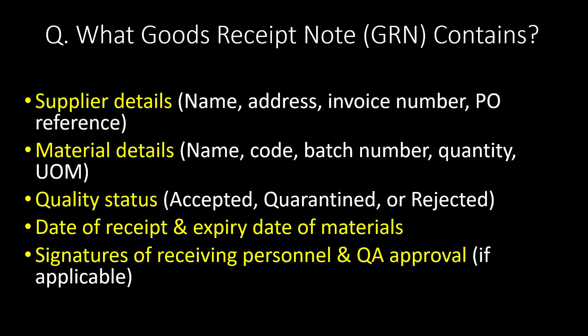What does a Goods Receipt Note (GRN) contain? GRN contains supplier details like name and address, invoice number, PO reference, material details, quality status, date of receipt, expiry date of materials, signature of receiving personnel, and QA approval if applicable.